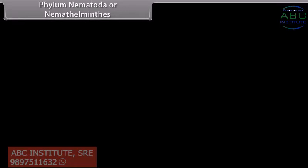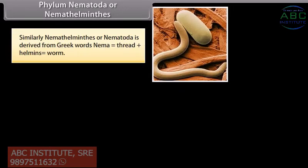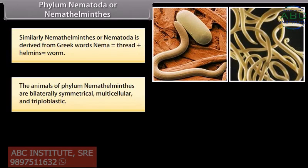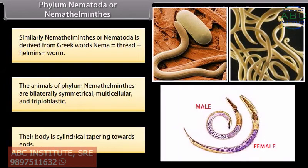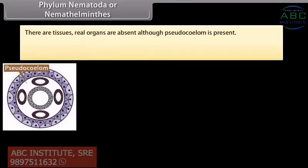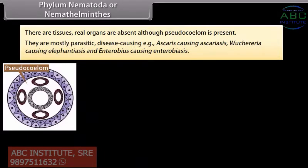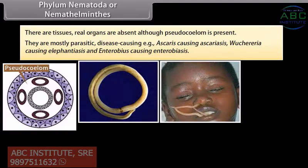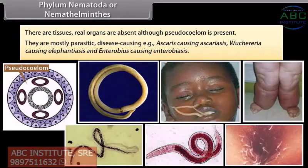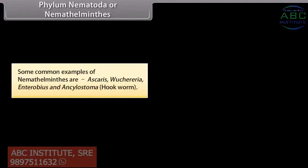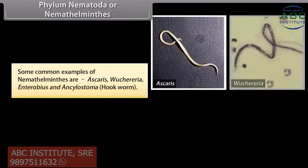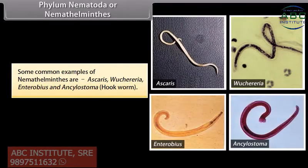Phylum Nematoda or Nemathelminthes is derived from Greek words 'nema' meaning thread plus 'helminth' meaning worm. The animals are bilaterally symmetrical, multicellular and triploblastic. Their body is cylindrical, tapering towards ends. Tissues are present but true organs are absent, although a pseudocoelom is present. They are mostly parasitic and disease-causing, e.g. Ascaris causing ascariasis, Wuchereria causing elephantiasis, and Enterobius causing enterobiasis. Common examples include Ascaris, Wuchereria, Enterobius and Ancylostoma (hookworm).